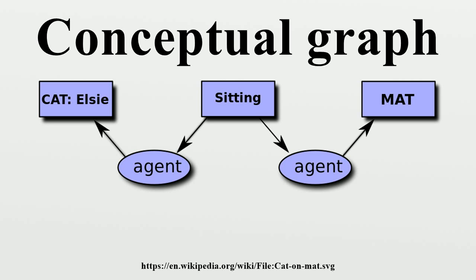COGIT-ANT and COGUI are tools that implement the GBKR model. COGIT-ANT is a library of C++ classes that implement most of the GBKR notions and reasoning mechanisms. COGUI is a graphical user interface dedicated to the construction of a GBKR knowledge base.